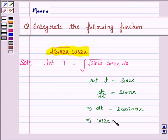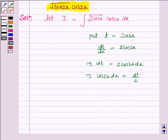And this again implies cos 2x into dx is equal to dt by 2. Now cos 2x into dx is dt by 2 and t is sin 2x.